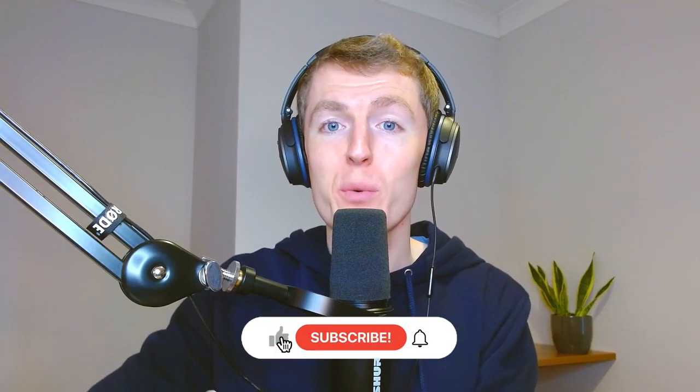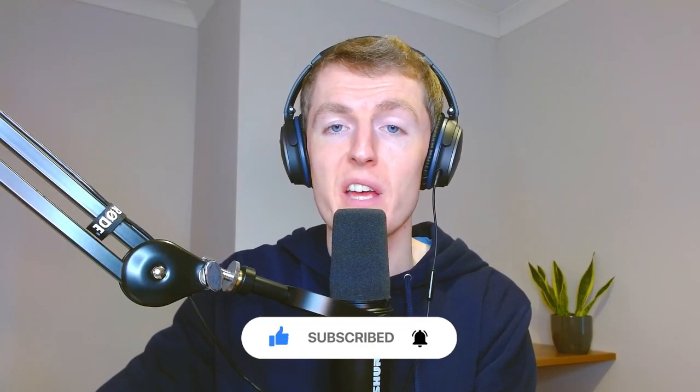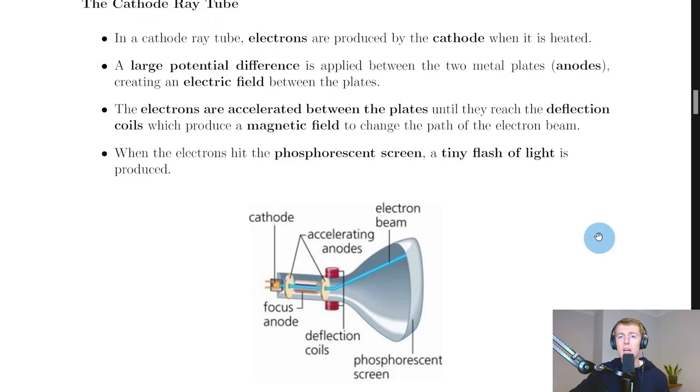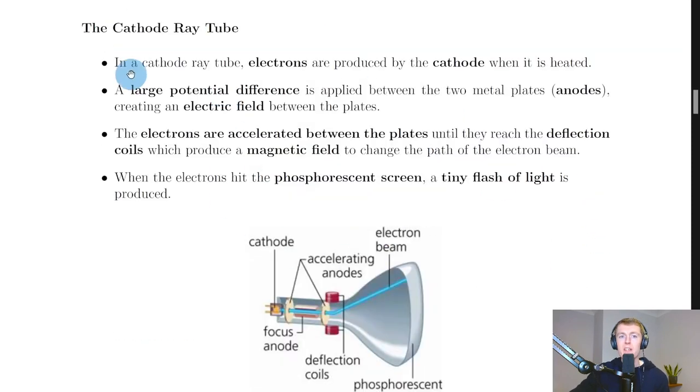Hey guys, in this video we're going to look at our first type of particle accelerator, which is the cathode ray tube. One of the simplest types of particle accelerator you might come across is the cathode ray tube, and it looks like this.